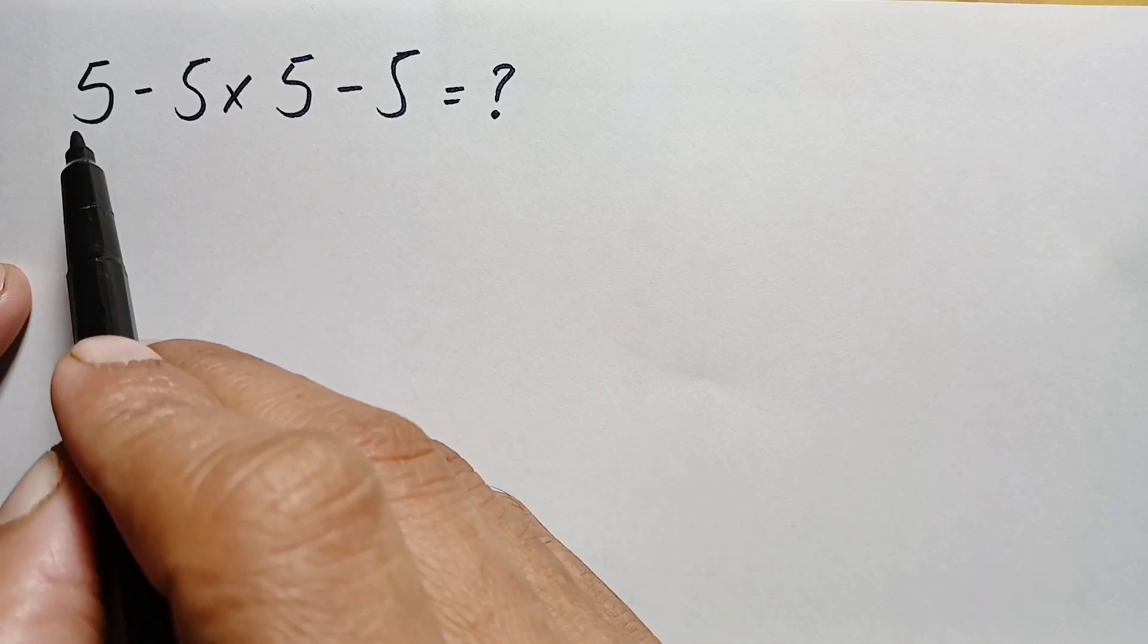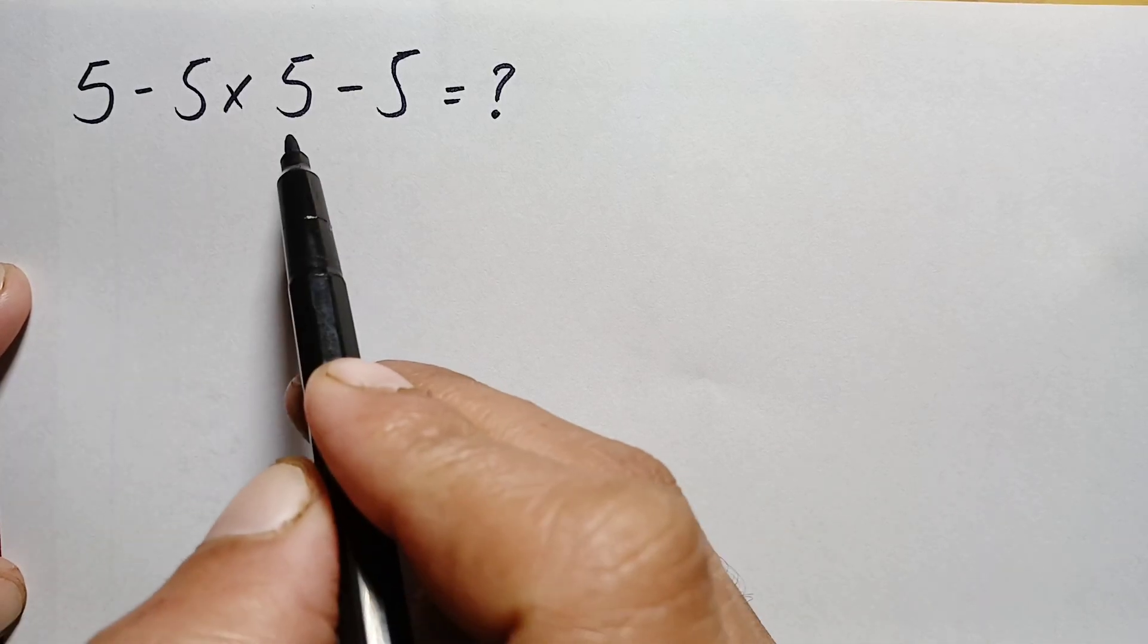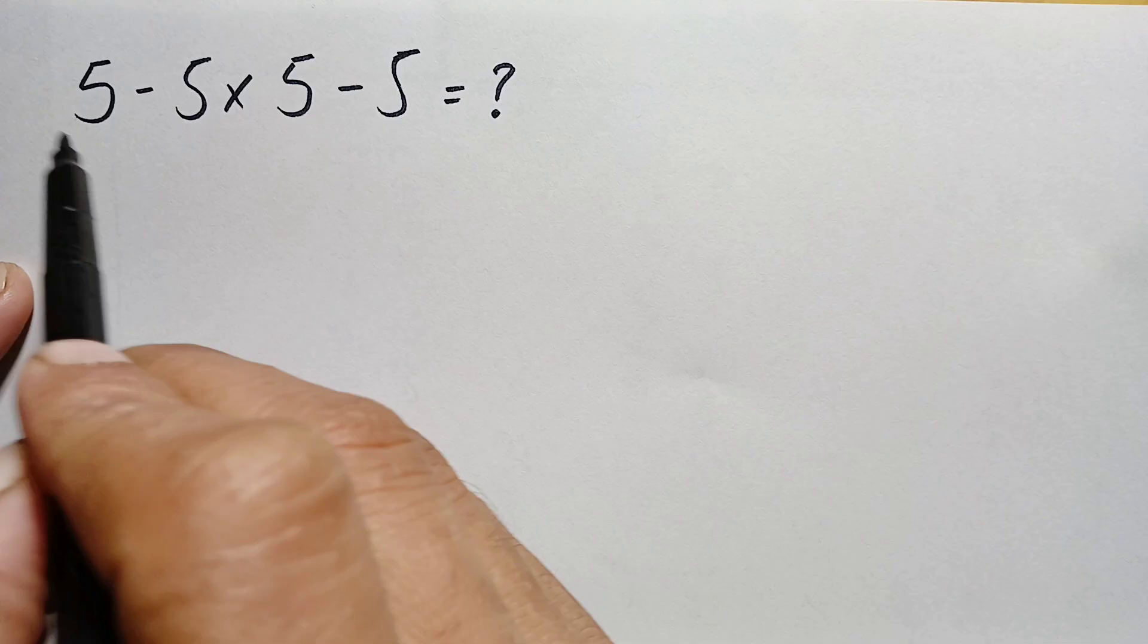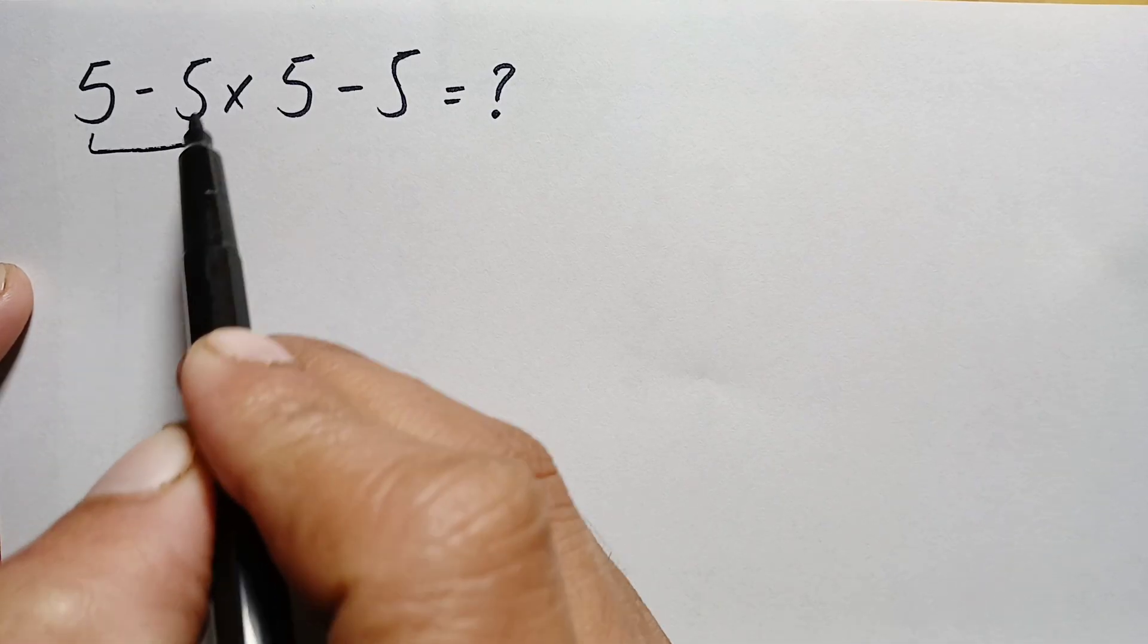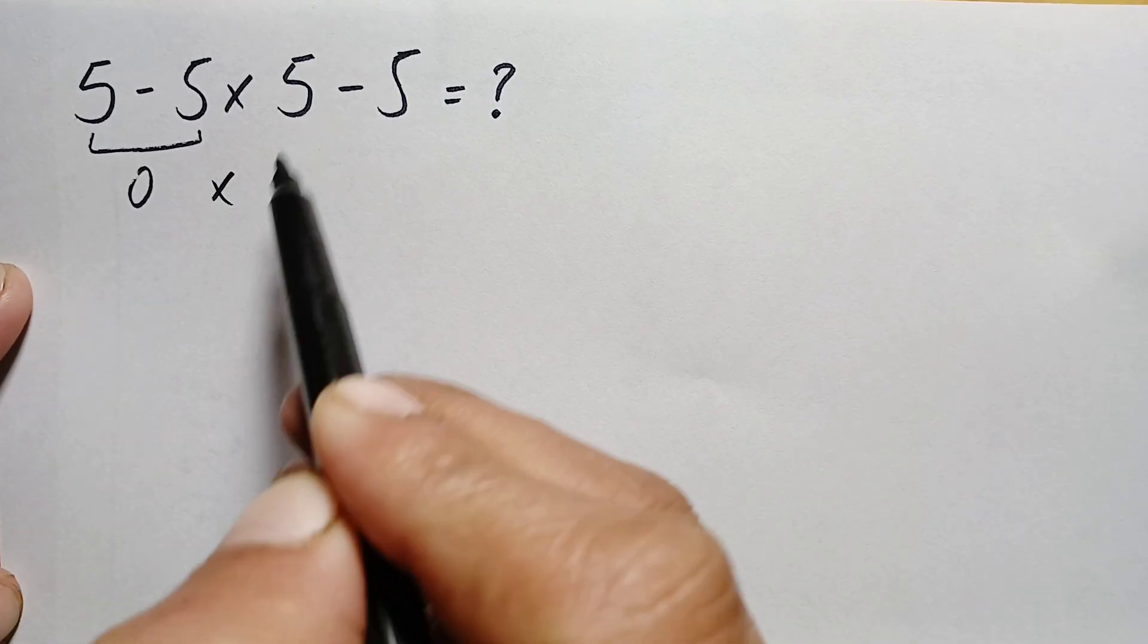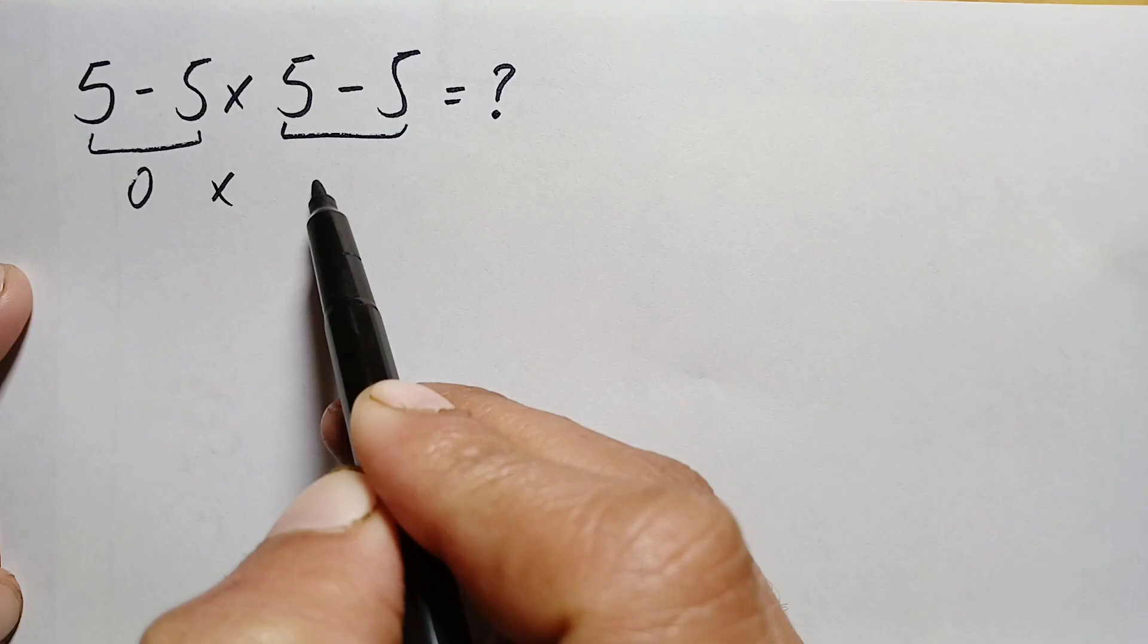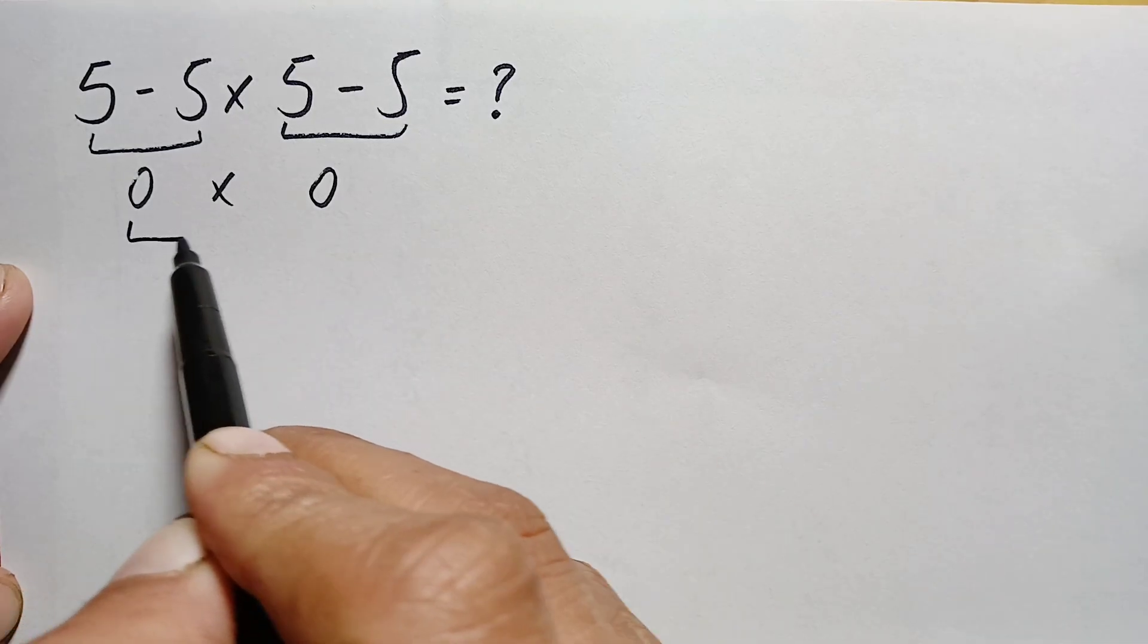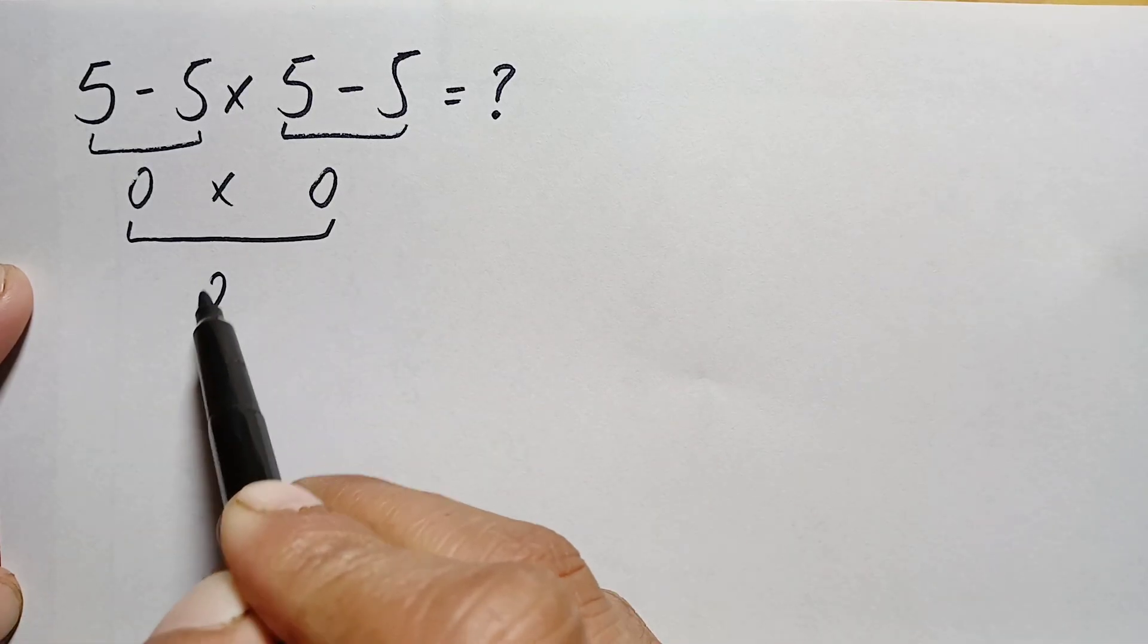What is the value of 5 minus 5 times 5 minus 5? Here 5 minus 5 is simply 0, and 5 minus 5 is also 0, so 0 times 0 is simply 0.